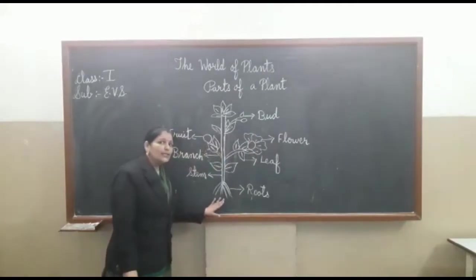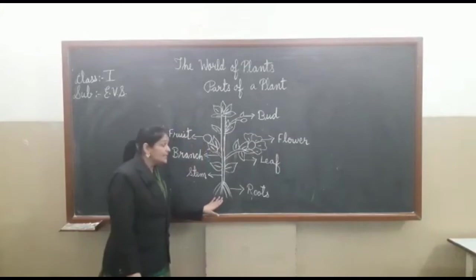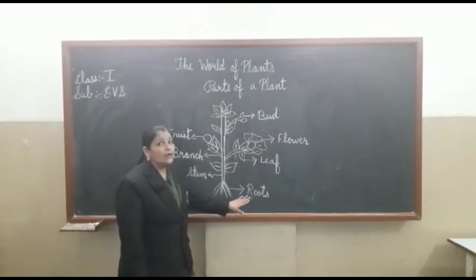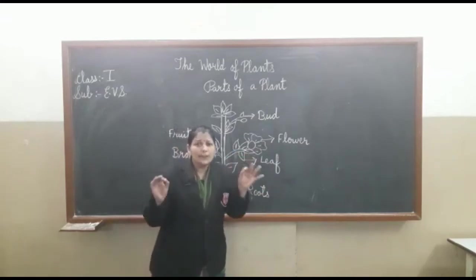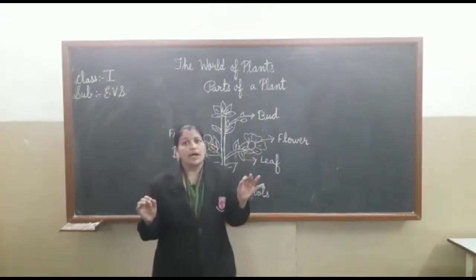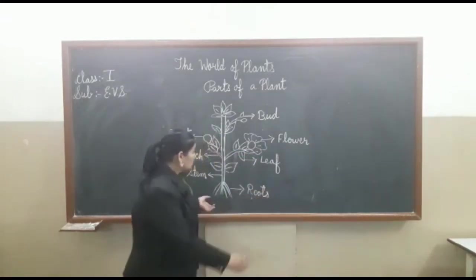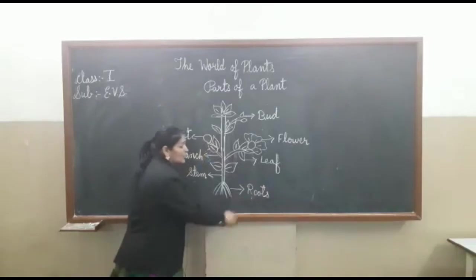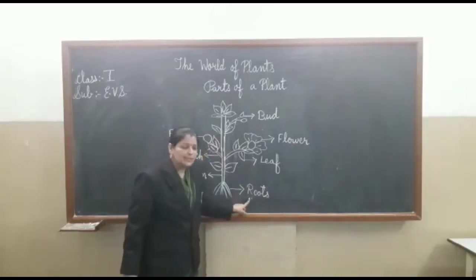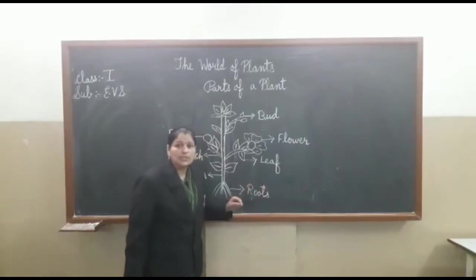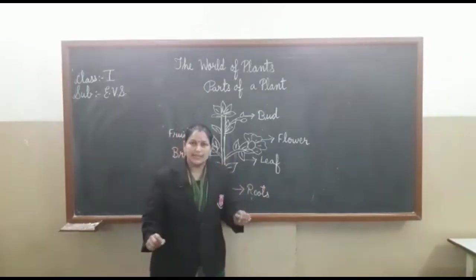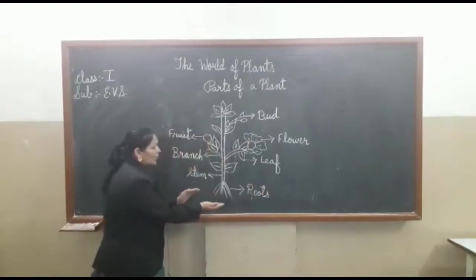The first thing we are going to see is this part — these are roots. Every plant has its root. The spelling is R-O-O-T-S. Roots.